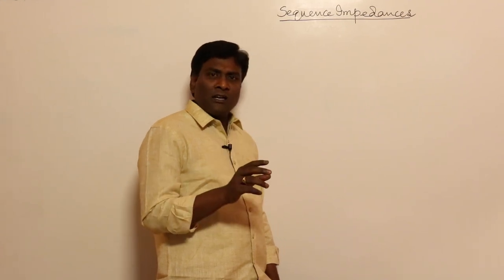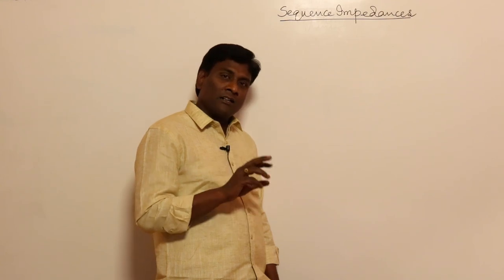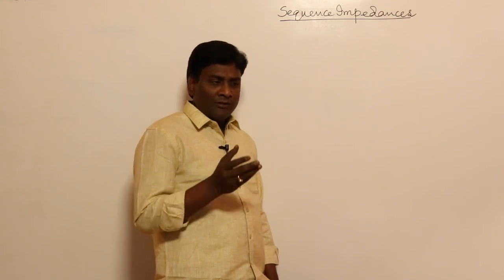In our previous video, we saw how to analyze unsymmetrical conditions using sequence components or symmetrical components. Now we need to understand sequence impedances. In this video, I'm going to explain, for example in a synchronous machine, whether positive sequence impedance will be more or less compared to zero sequence, and similarly for transmission lines and transformers. We'll also discuss which types of currents can flow in star and delta connections, and why in a transformer positive, negative, and zero sequence impedances are the same.